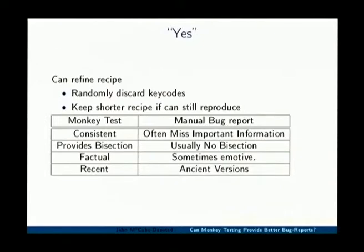The short answer is yes, it can produce better bug reports. Because monkey testing, being an automated process, can produce consistent bug reports where all the required information is included, like backtraces and so forth. Whereas users will often forget some important piece of information.